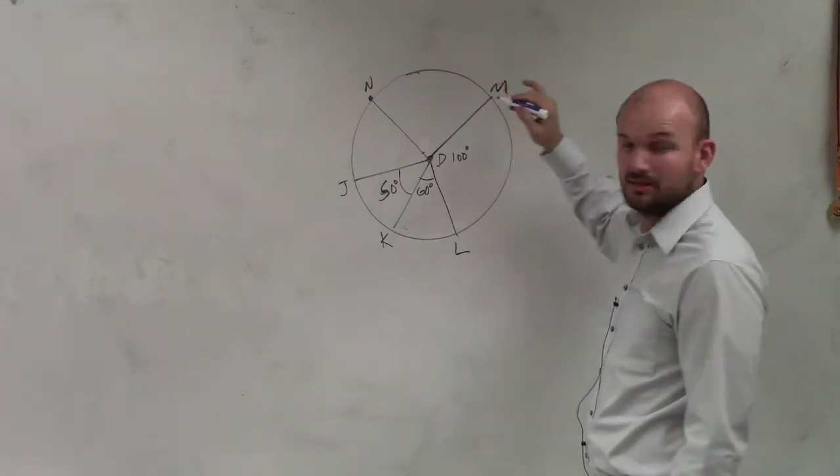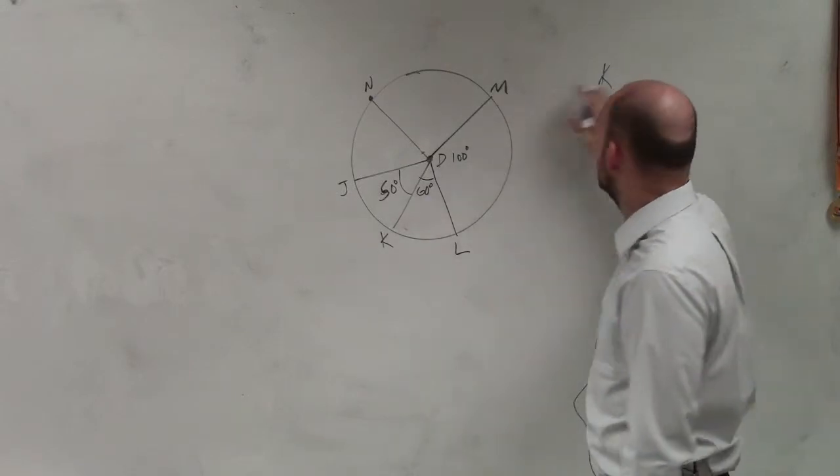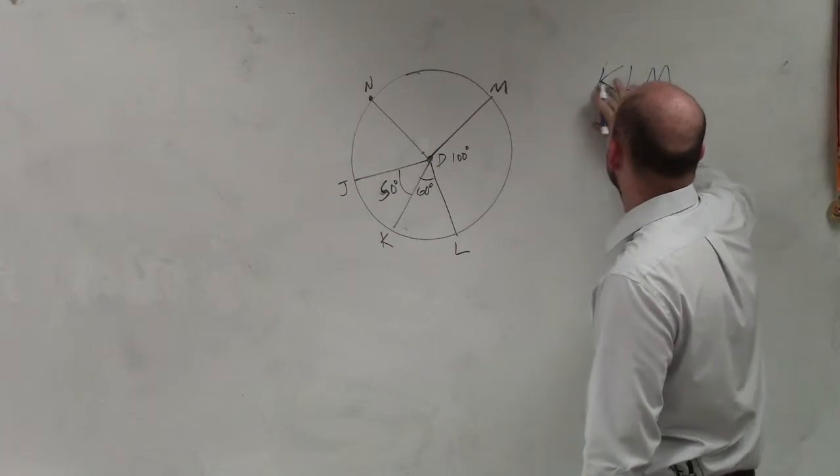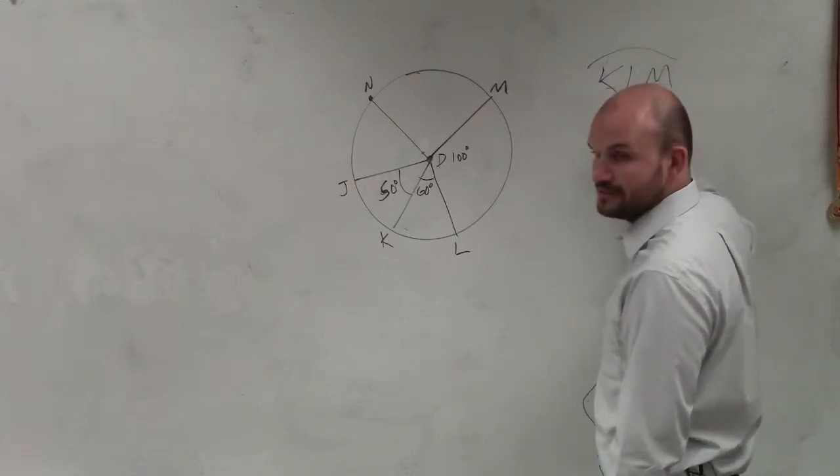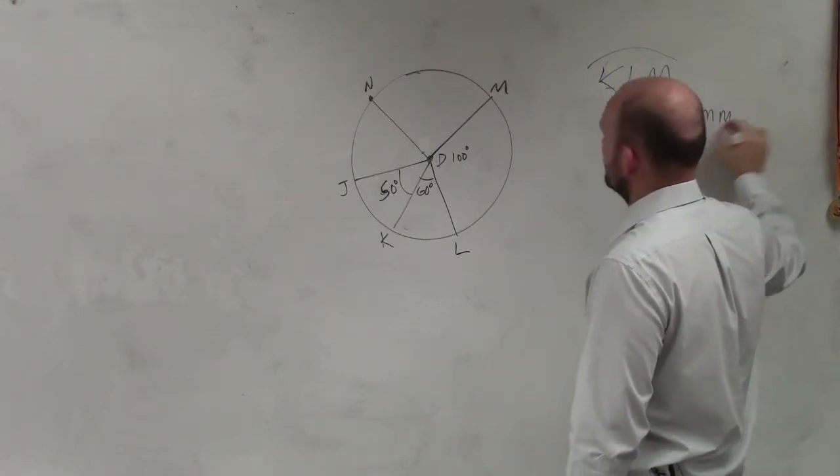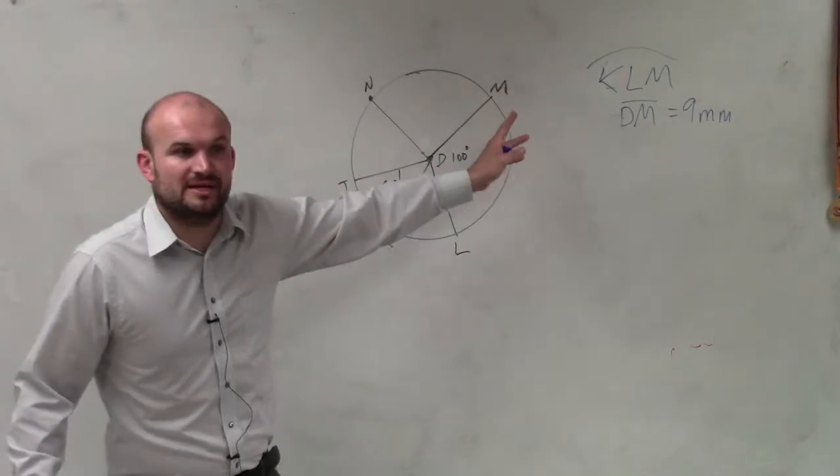KLM. The arc KLM if DM equals 9 millimeters. So D to M is 9 millimeters.